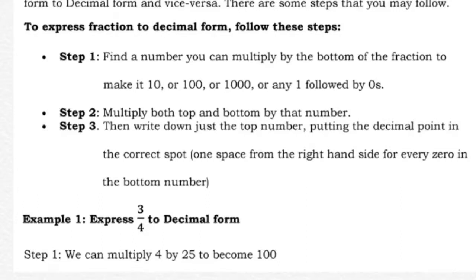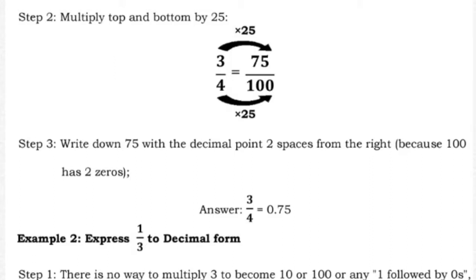For example, express 3/4 to decimal form. Step 1: we can multiply 4 by 25 to get 100. Step 2: multiply top and bottom by 25 — so 3 times 25 equals 75, over 4 times 25 equals 100. Step 3: write down 75 with the decimal point 2 spaces from the right because 100 has 2 zeros. So 3/4 equals 0.75.